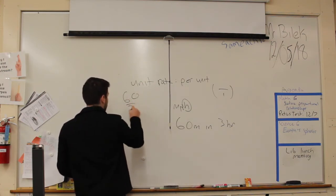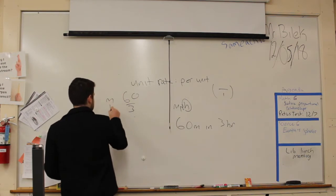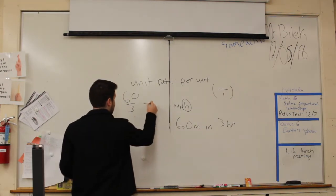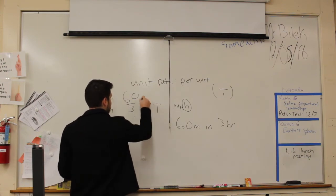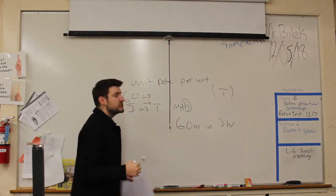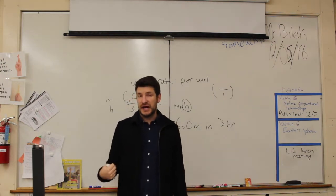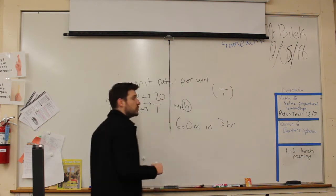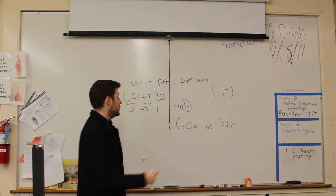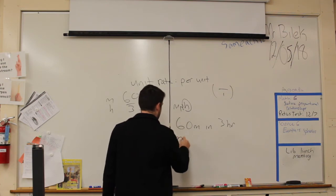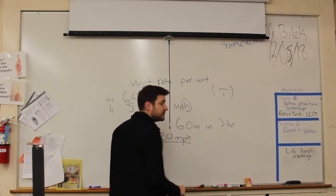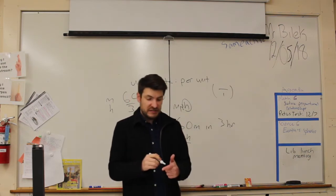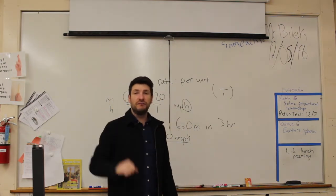So I have 60 over 3, this being miles, this being hours, and I want to put this over one. So how do I get this guy over one? Divide this by 3, divide this by 3. If you're traveling 60 miles in three hours, then your unit rate or your miles per hour is going to be 20. 20 over 1, or you can answer it with my unit rate is 20 miles per hour. That's how far I'm traveling in one hour.